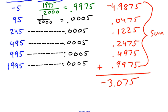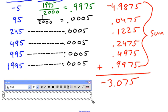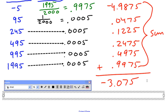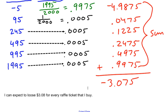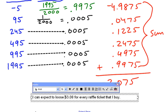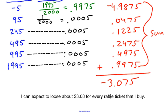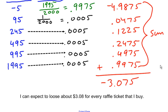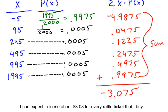What does that mean? Well, it means this. Since my expected value is negative 3.075, I can expect to lose $3.08 for every raffle ticket that I buy. You should always write your answer in the context of the problem. It's a word problem, so you want to write your answer as a complete sentence. My gain is negative 3.075. So I can expect to lose, and a good word to put in there is about. I can expect to lose about $3.08 for every raffle ticket that I buy. So there's an example of how you can find expected value.